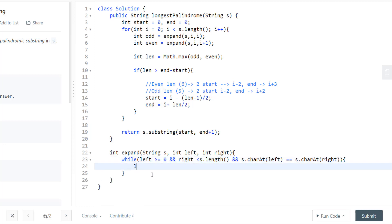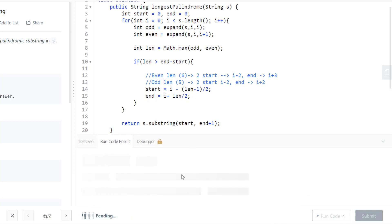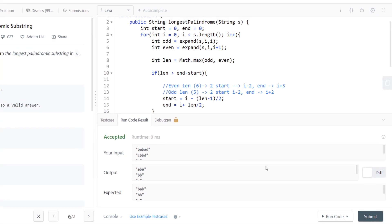If this is the case, my left will move one step left and my right will move one step right. Finally, we will return the length. That is, right minus left minus 1 as we had talked about in our presentation. So this whole thing can give us the answer.